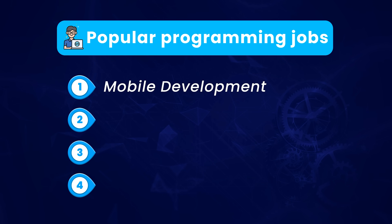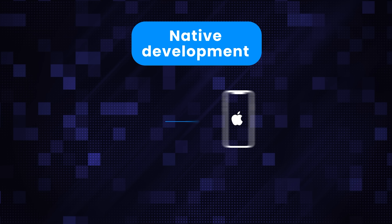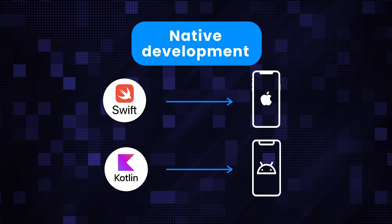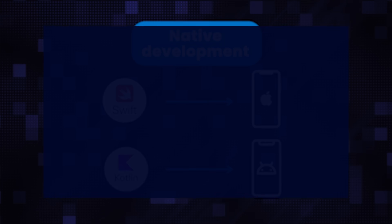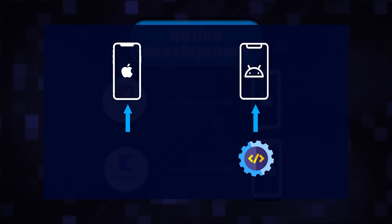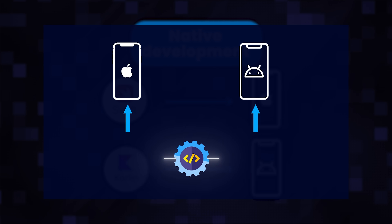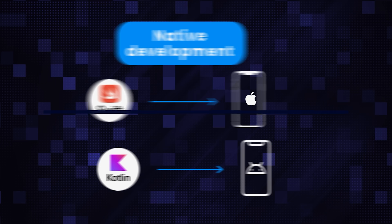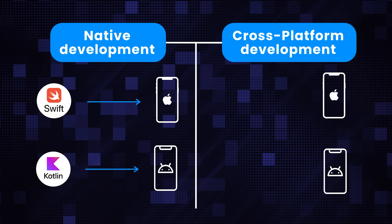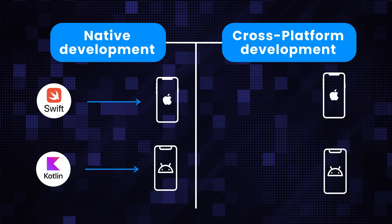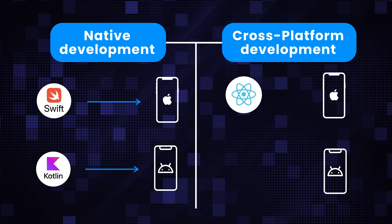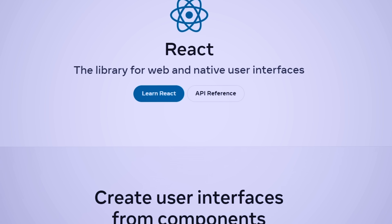Let's start with mobile development. If you want to build native apps for iPhone, pick Swift. For Android, you can learn Kotlin. Native apps run only on one platform, either iOS or Android. There is also a way to write one app that runs on both — this is called cross-platform mobile development. The two popular platforms for this are React Native and Flutter. React Native is based on React, a popular JavaScript library, so learn JavaScript for React Native. For Flutter, you'll need to learn Dart.